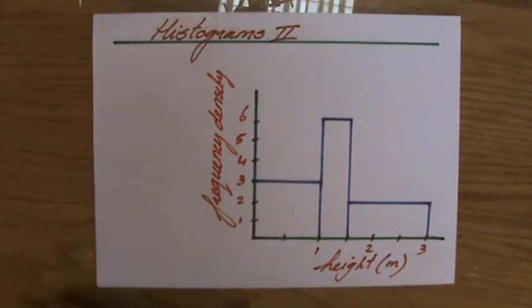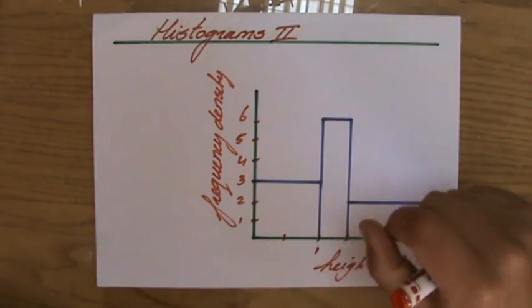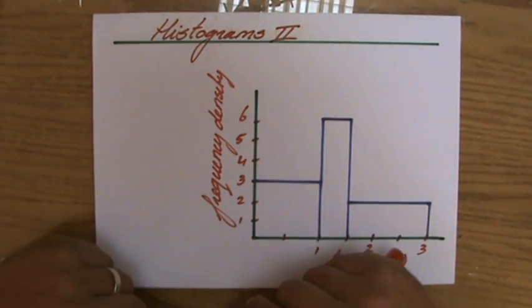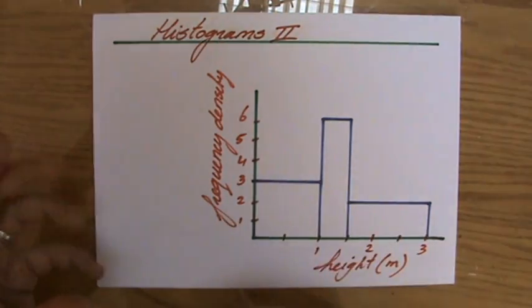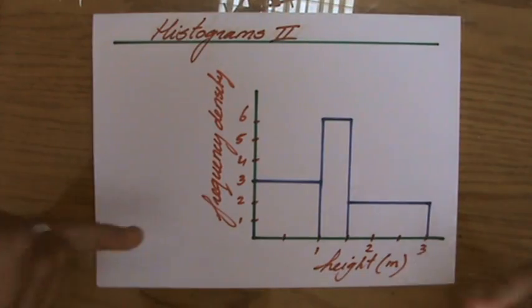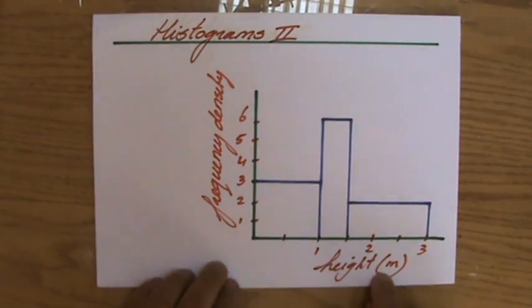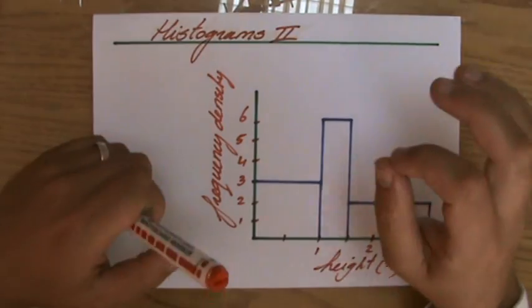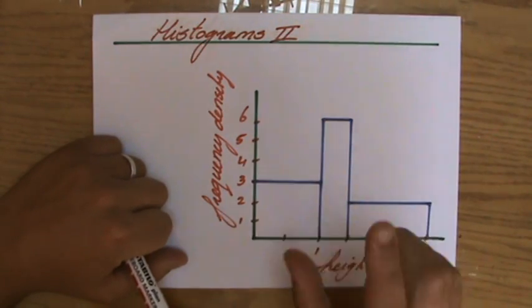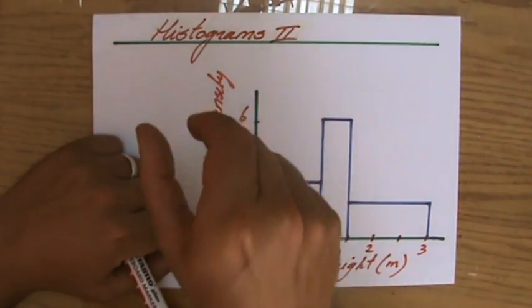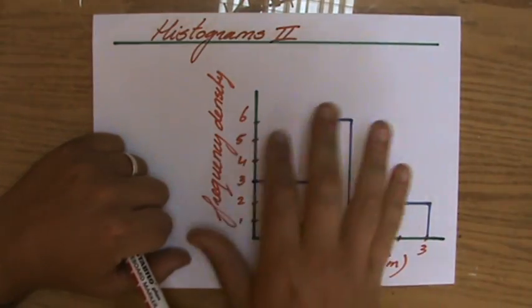Some people think it's a bar chart and they make all sorts of mistakes because they don't know how to read a histogram. Now what is important about histograms: first of all, the bars are joined together, always. A bar chart, for instance, the bars may have a space between them, but for a histogram they're always joined together. And very important about histograms is that the width of those bars may differ. For a bar chart it's always the same width, but for a histogram that is not the case.